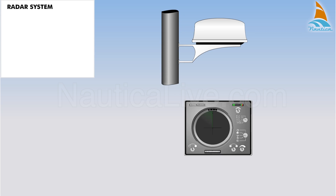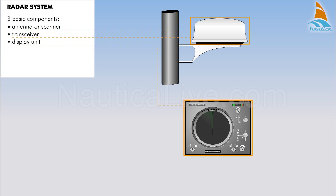Radar systems comprise three basic components: a transmitter and a receiver unit, also called a transceiver; an antenna, also known as a scanner; and a display unit. In many radar units, the transceiver is located in the scanner.